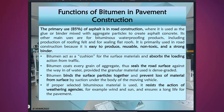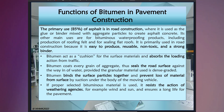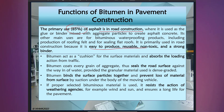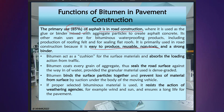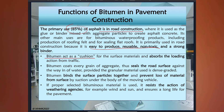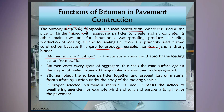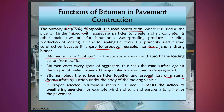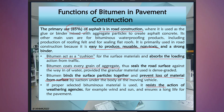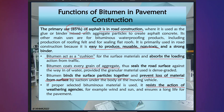Moving on to the function of bitumen in pavement construction. The primary use — 85% of asphalt — is in road construction, where it is used as a glue or binder, mixed with aggregate to create asphalt concrete. Bitumen is easy to produce, reusable, non-toxic and a strong binder. It acts as a cushion for surface materials and absorbs loading action from traffic. Bitumen coats every grain of aggregate, seals the road surface against water, and provides a waterproof surface. It also binds surface particles together and prevents loss of material from the surface by suction under moving vehicles. If properly selected, bituminous material resists the action of weathering agencies such as wind and sun, ensuring a long life for the pavement.